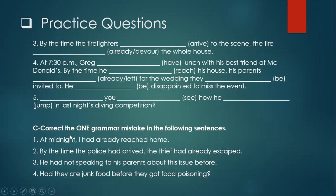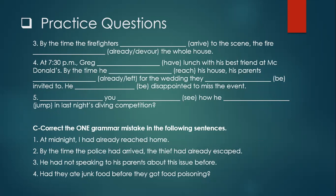In section C: the first sentence says 'at midnight, I had already reached home' — remember, do I say 'at midnight' or what do we use? The second: 'by the time the police had arrived, the thief had already escaped.' The third: 'he had not speaking to his parents about this issue before.' The last: 'had they ate junk food before they got food poisoning?' Take your time to solve them, and next you will have the answer key.